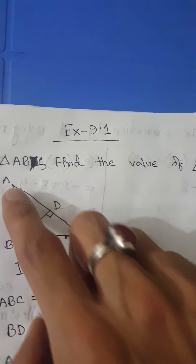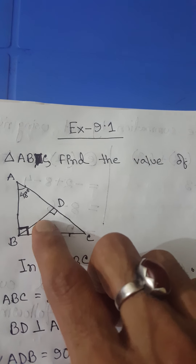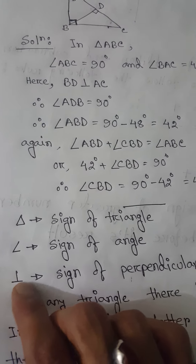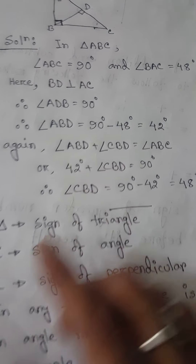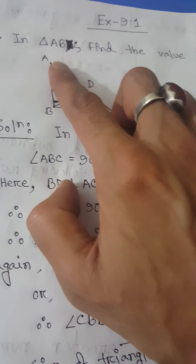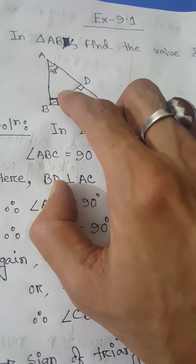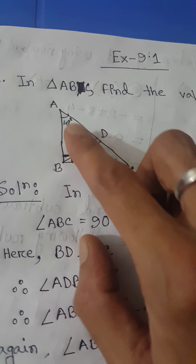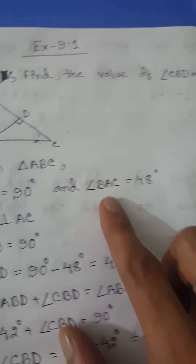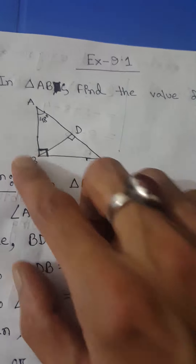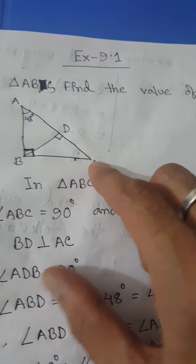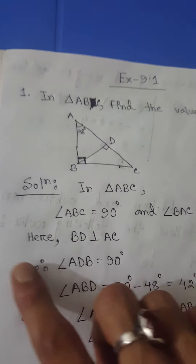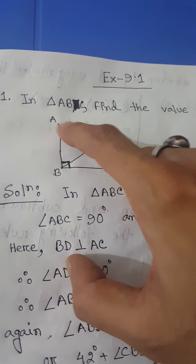In the solution, in triangle ABC, angle ABC is 90 degrees. Here there is the sign of perpendicular, and as I told you, the perpendicular sign means both sides represent 90 degrees — so this is one right angle. Also, angle BAC is given as 48 degrees, where A is the middle letter.